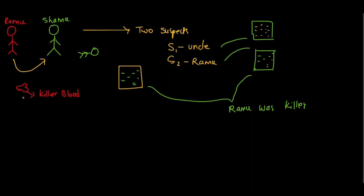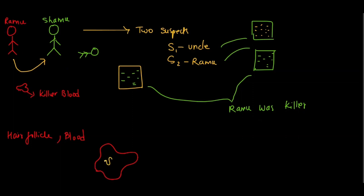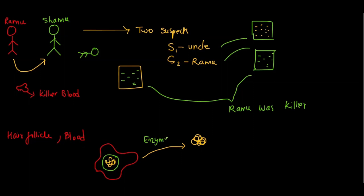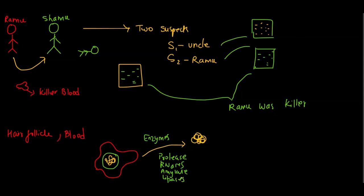To perform this technique, first we need a sample. The sample could be anything — a hair follicle, blood, or any type of cell — but we need a cell. Inside the cell, inside the nucleus, we have DNA. To isolate the DNA, we treat it with enzymes: proteases, RNases, amylases, lipases, etc.